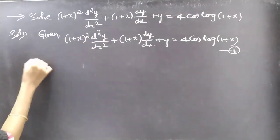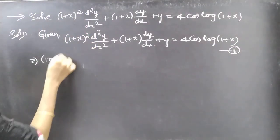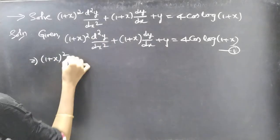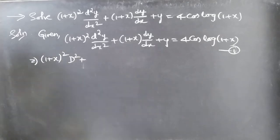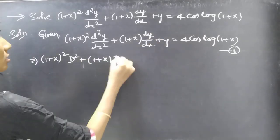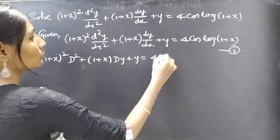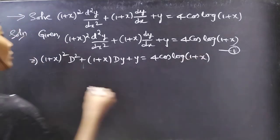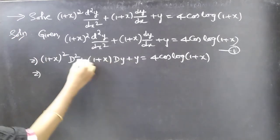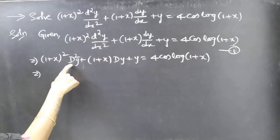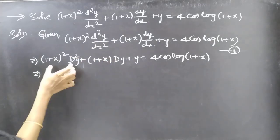Now let's write it in differential operator D form. Write d²y/dx² as D², where D is the differential operator, plus (1+x)·Dy plus y equals 4cos(log(1+x)). Now take y common from all three terms of the LHS.